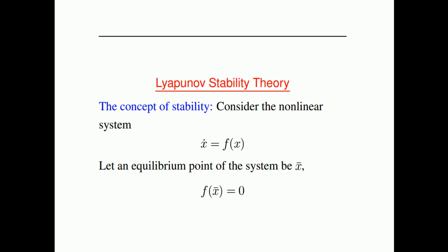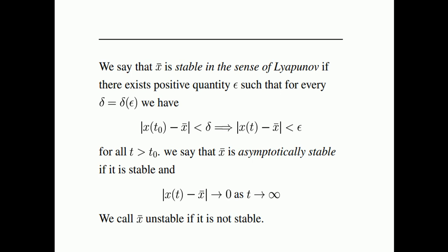Consider the nonlinear system x-dot equals f of x. Let x-bar be an equilibrium point of the system. If this is an equilibrium point, the system will be stationary on it, so f of x-bar equals 0. We say that x-bar is stable in the sense of Lyapunov if there exists a positive quantity epsilon such that for every delta — where delta is a function of epsilon — we have: the norm of x(t₀) minus x-bar less than delta implies the norm of x(t) minus x-bar less than epsilon.